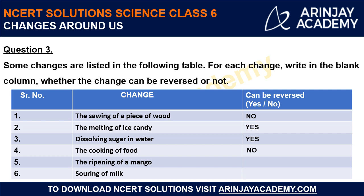The fifth change is the ripening of a mango. If a mango has just ripened, you cannot get back to a raw mango. This is a chemical change and cannot be reversed — so it's a no. Last, souring of milk: if your milk has turned sour, you cannot get back to the original milk. This is again an irreversible change — it's a no. So we are done with this question.